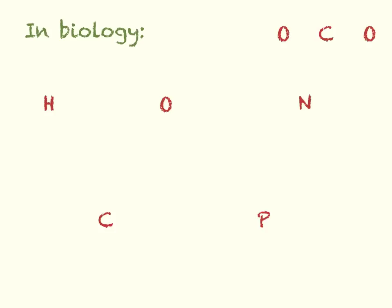As you progress in your studies of chemistry you'll run into all kinds of exotic bonding under special conditions, but in biology, for almost all your purposes: hydrogen is going to make one covalent bond, oxygen makes two, nitrogen makes three, carbon always makes four covalent bonds, and phosphorus makes five. You can refer to your chemistry text for the details of why.